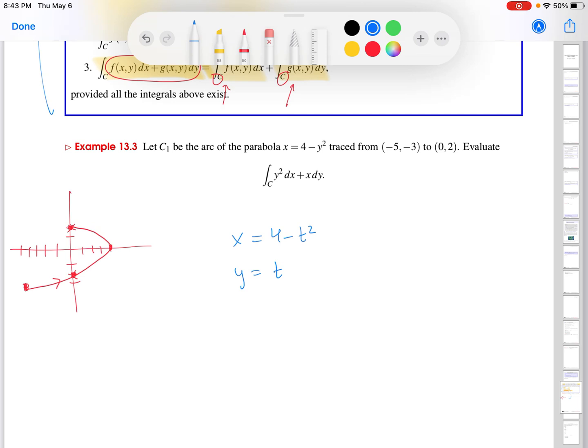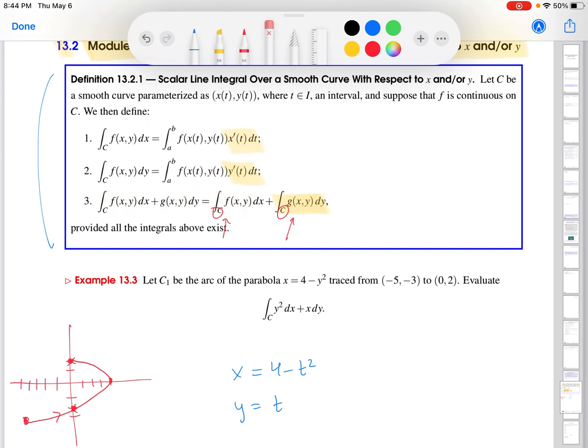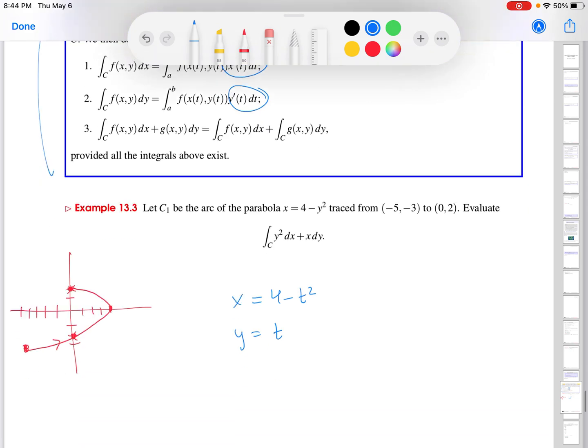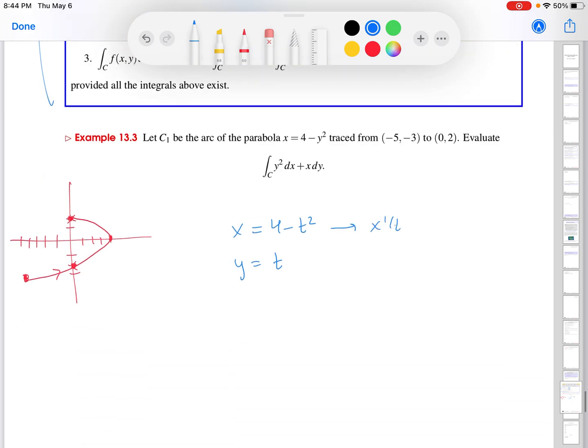And then we are going to need, not the big square root thing that we were talking about in the previous lesson, dx dt squared plus dy dt squared, because we're not doing a line integral with respect to arc length. We're doing a line integral with respect to dx first, and then with respect to dy. So I am going to need information about, going back up here, information in the first integral, I'm going to need x prime. In the second integral, I'm going to need y prime. So I'm going to calculate that here. So x prime of t is minus 2t. And then y prime of t is 1.